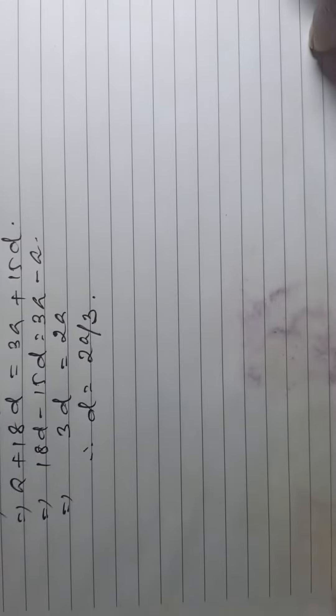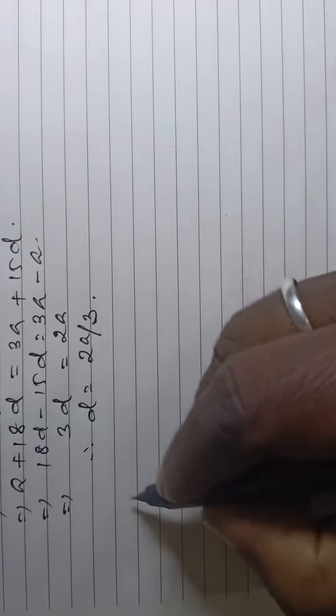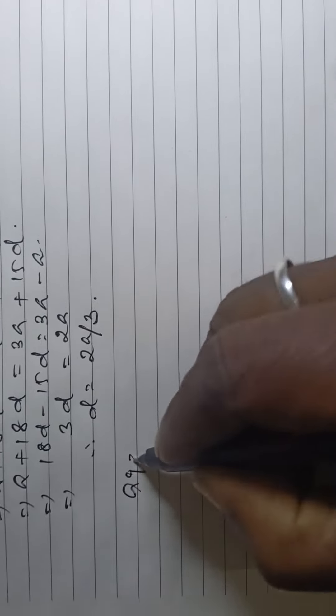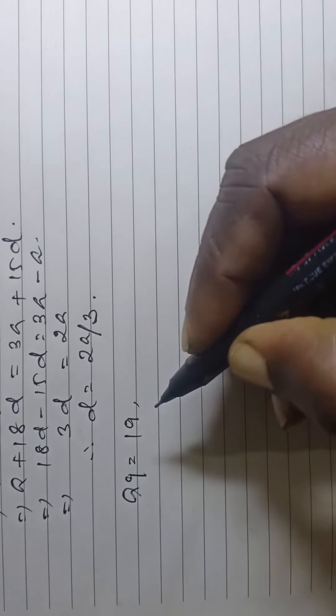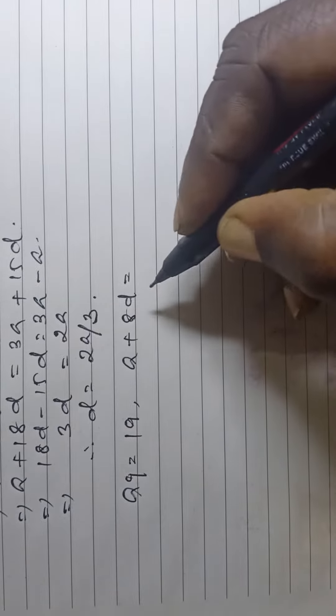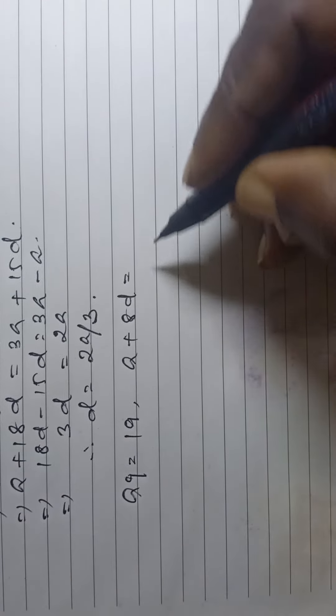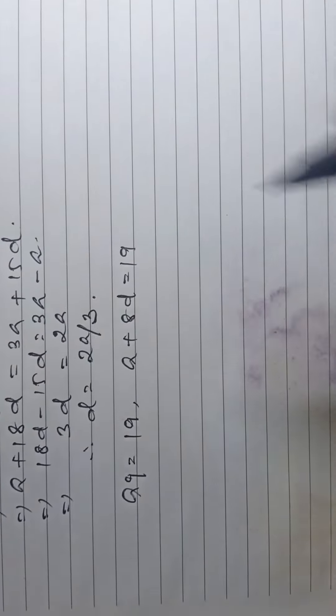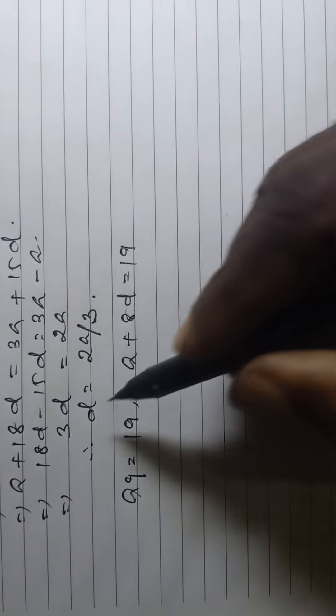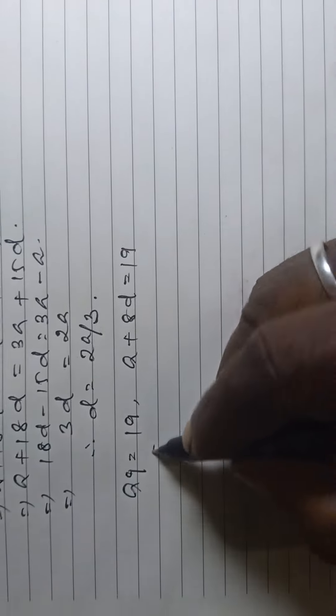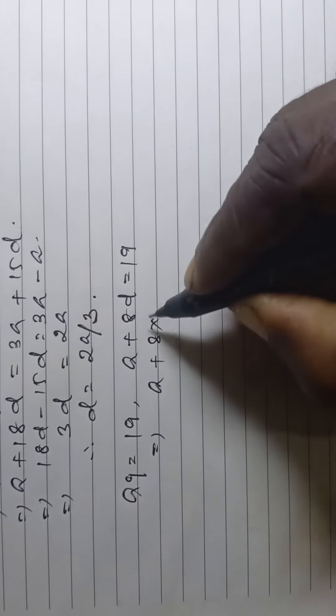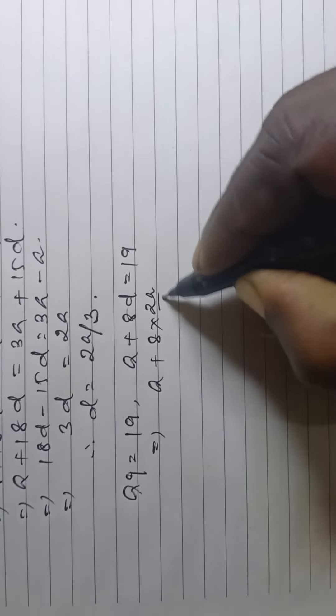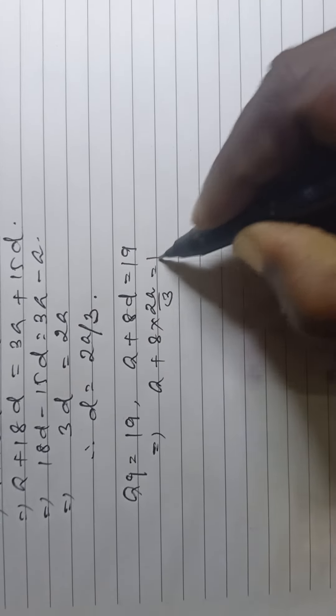Now, a9 is equal to 19 from the question, so a plus 8d is equal to 19. Now, taking this value, a plus 8 into 2a by 3 is equal to 19.